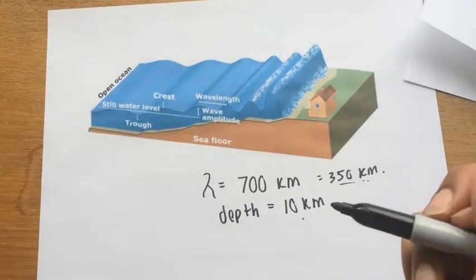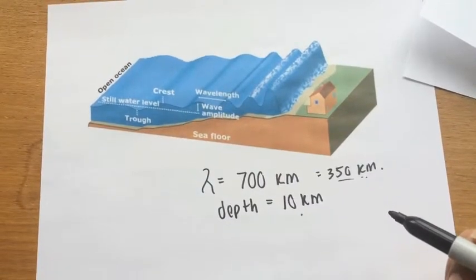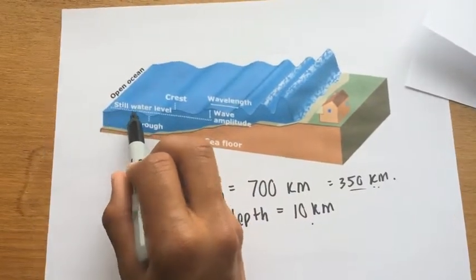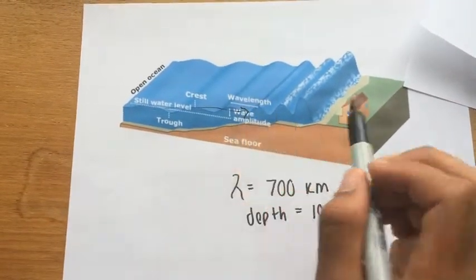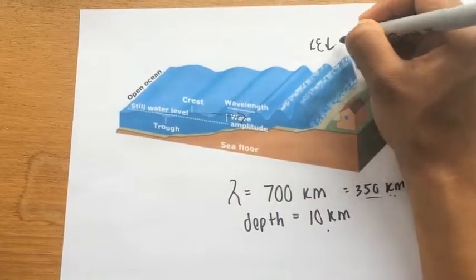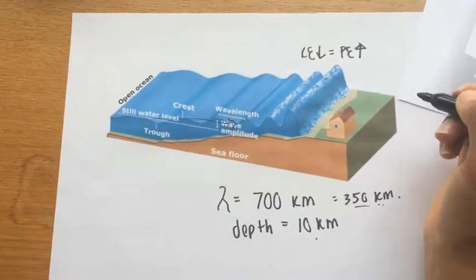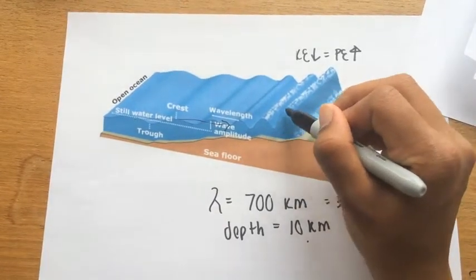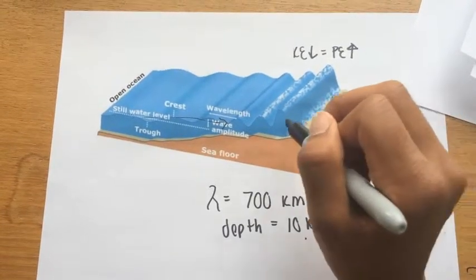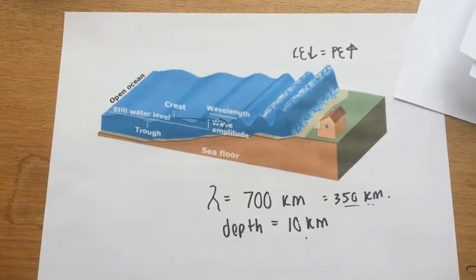Tsunamis move at incredibly high speeds because the depth of the ocean is so great. As they reach shallower water moving towards the shore, their kinetic energy decreases, which means their potential energy has to increase. As a result, they grow larger and larger and larger until they reach the shore, at which point they often overcome all buildings in the region and lead to mass destruction.